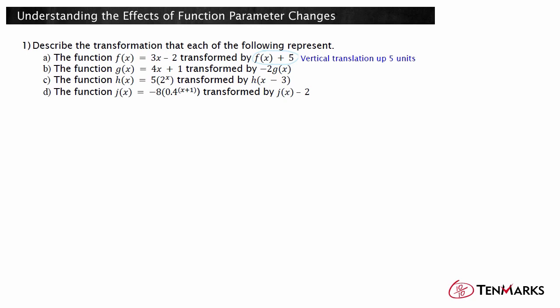The function g of x equals 4x plus 1, transformed by negative 2 times g of x. Negative 2 is multiplied by the function value, so this represents a vertical stretch or compression. Since the absolute value of k is 2, which is greater than 1, it is a vertical stretch by a factor of 2. The fact that the k value is negative means the graph is also reflected over the x-axis. So the transformation negative 2 times g of x is a reflection over the x-axis and a vertical stretch by a factor of 2.